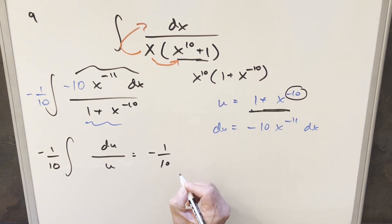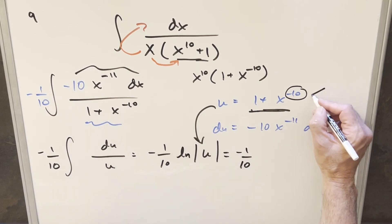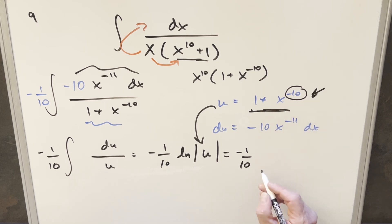So we'll just go ahead and integrate this. We have minus 1 over 10. This is going to become natural log absolute value of u. Then I'll go ahead and back substitute it. But when I do this, notice that this rate here is always going to be positive just because we have an even power on the x. So I'll drop the absolute value when I do this.